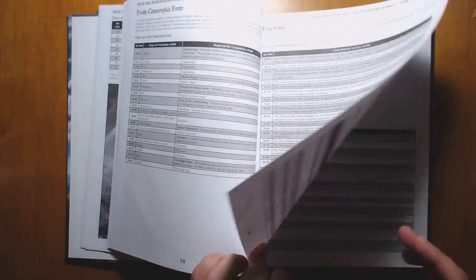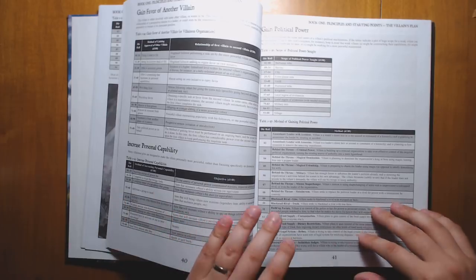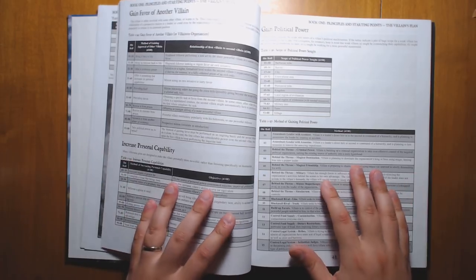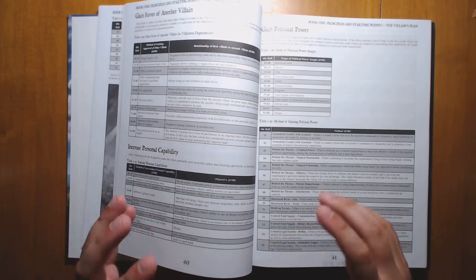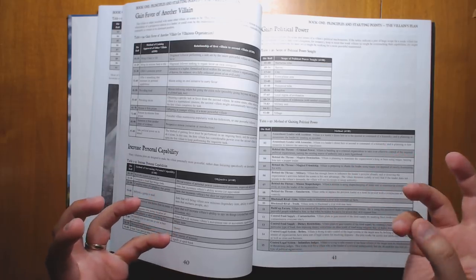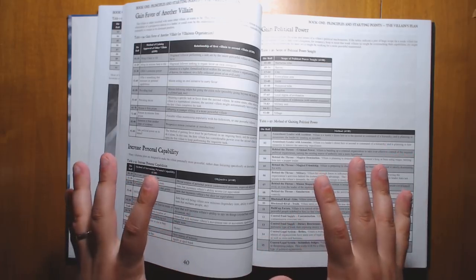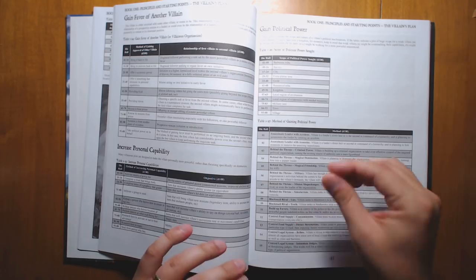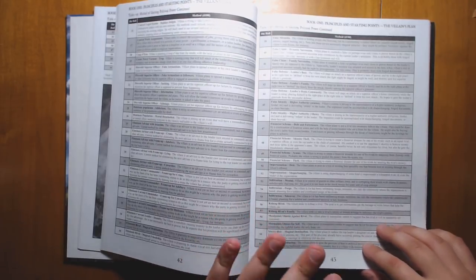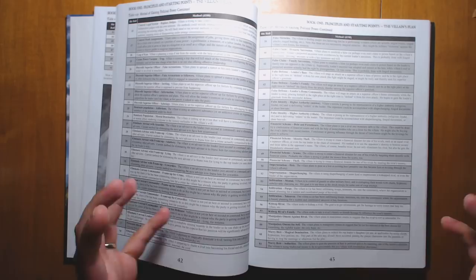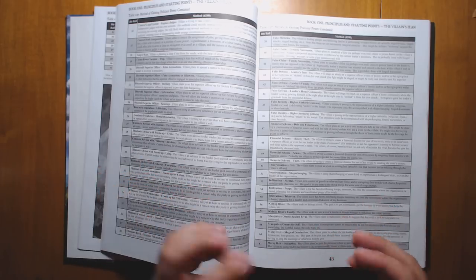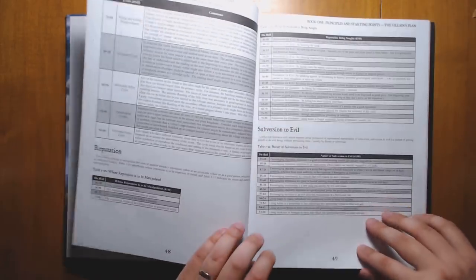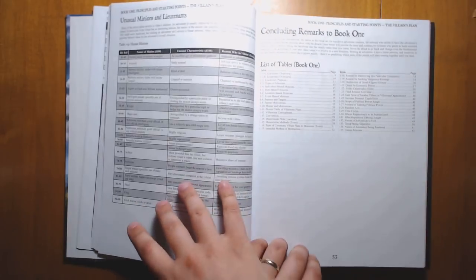Now, the only book that I've reviewed that's really similar to this is probably the Metamorphica, which is another big compilation of random tables. However, the Metamorphica at times is very abstract, and then it has a lot of ideas that you really have to work to fit together. Whereas in this book, the focus is much more on usability, where things are focused more on fantasy tropes and on being immediately useful.